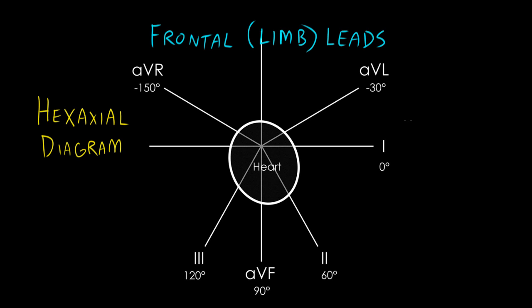If you have an impulse that's moving towards the camera, in this case let's say this dot is the camera, then you'll get an electrical deflection that's positive. Similarly, if you have an impulse that's moving away from the camera, you get an electrical deflection that's negative.